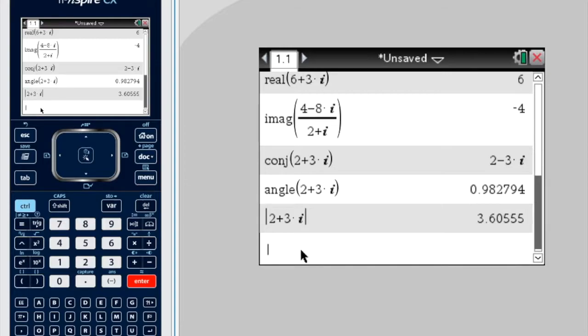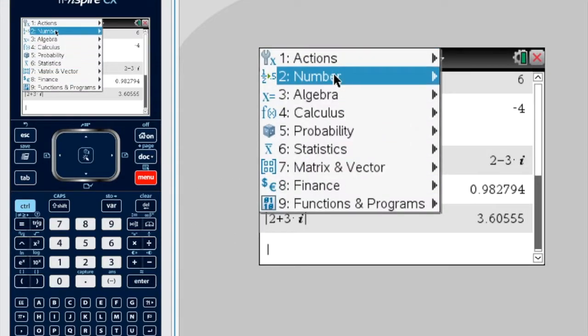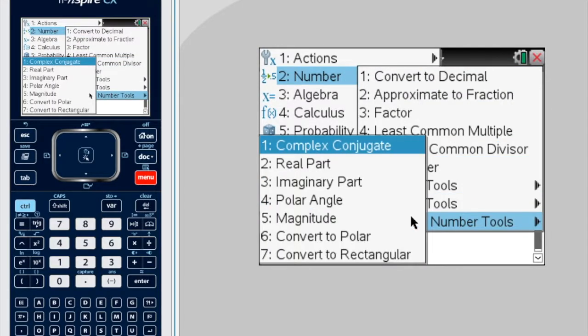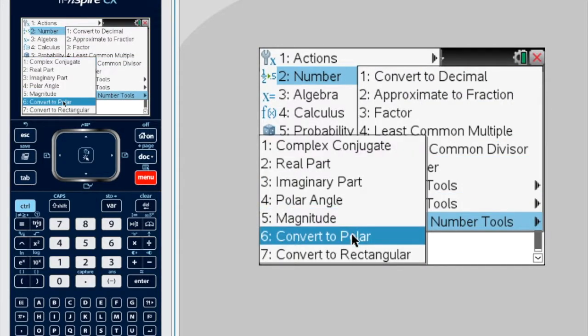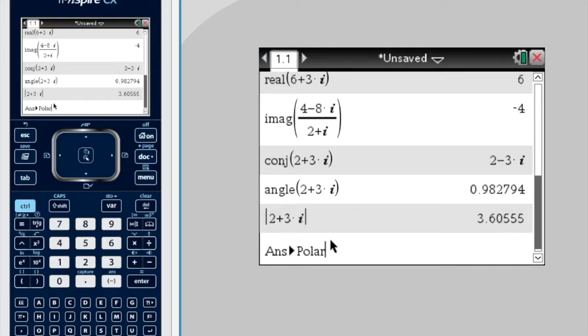Now, the calculator actually has a function to do that for us. So let's try that again. Menu, number, complex number tools. Okay, convert to polar. Polar is the mod arg form. Okay, so answer to polar.